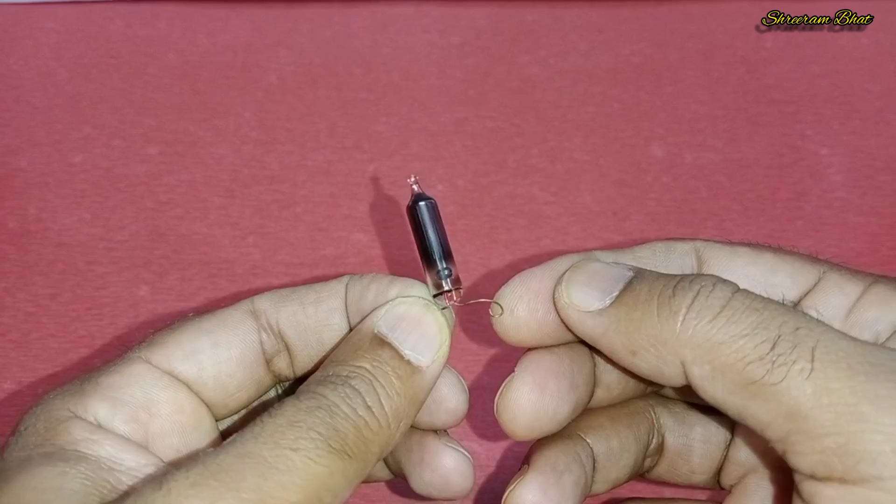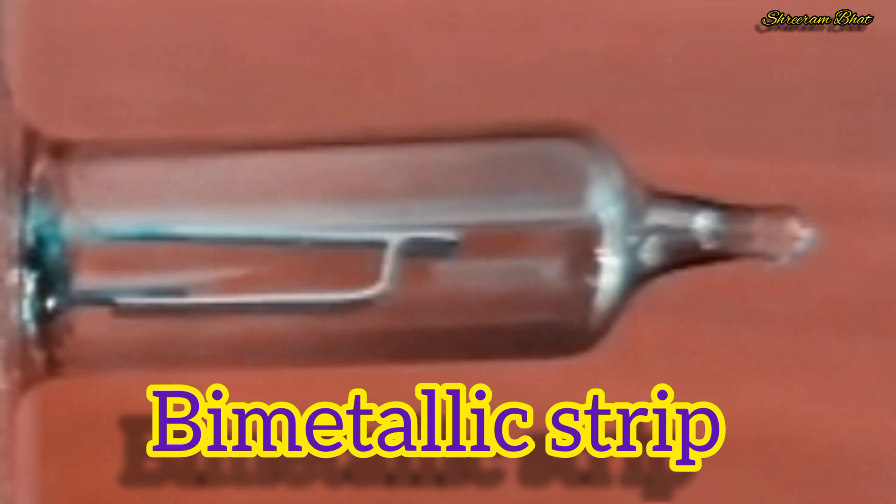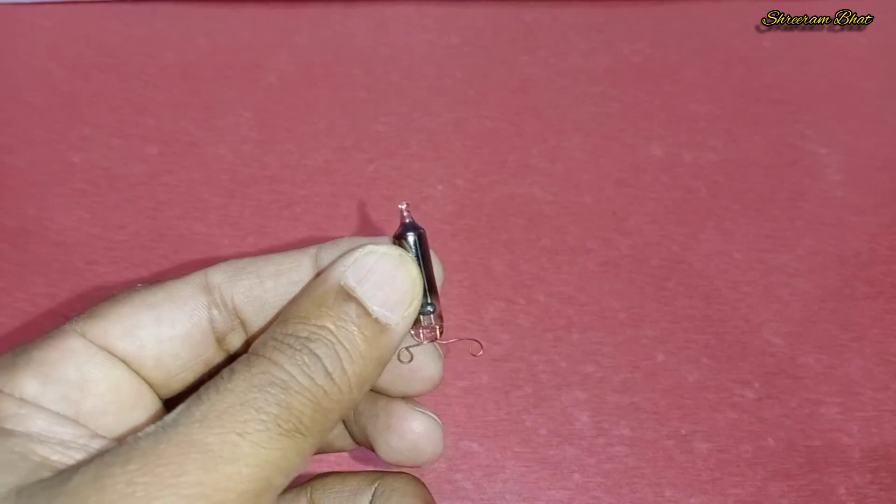This is a tube light starter. Within this is a bi-metallic strip, which works as a heat sensitive switch here.